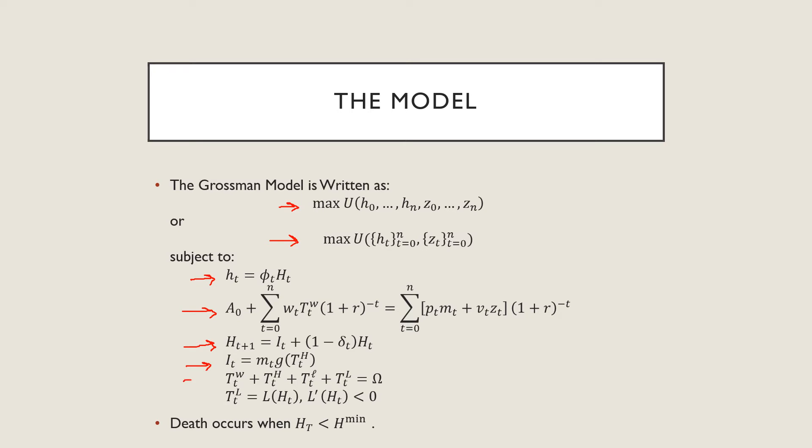The way we relate time in this model is that you have a certain amount of time in each period - we could say it's like 24 hours in a day, but we don't really specify here, so we just call it omega. And that could be allocated in terms of tw, which is time spent working, th, which is time spent invested in your health care, t lowercase l, which is your time invested in leisure, and t uppercase L here, which is your time lost from sickness.